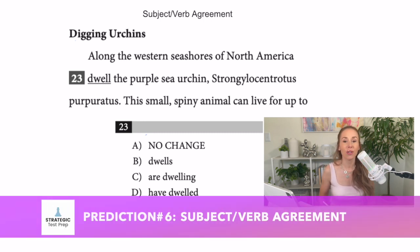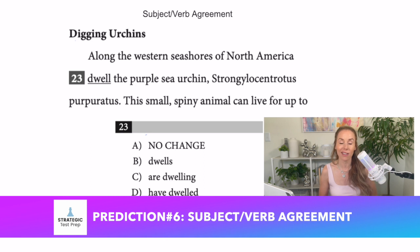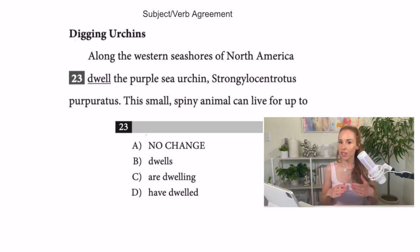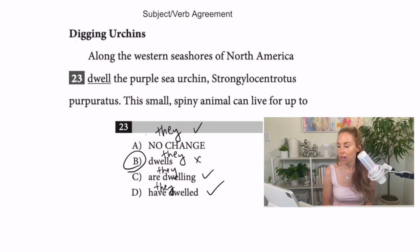All right. Subject verb agreement is huge. This is a standard English convention question, which means it comes up on the paper test and on the digital SAT. This was a really tricky one. So I like this example. Now what you can do, I just want to show you a trick. So if you're trying to figure out what verb tense to pick, you can actually take a pronoun, for instance, the pronoun they, it's a plural pronoun and test all of your answer choices. I can say they dwell. I can't say they dwells. I can say they are dwelling and I can say they have dwelled. So notice three of the four answer choices are verb tenses for a plural subject. Only one is singular. So it's going to be the one that's different. The singular one will be the answer. And when you go and test that out, we're talking about the purple sea urchin doing the dwelling and that's singular. So it would be the purple sea urchin dwells.